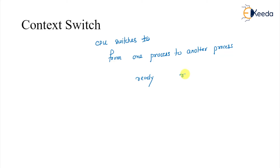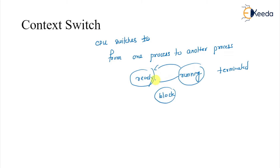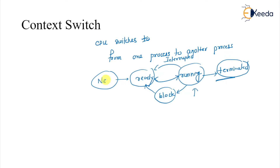There is also a blocked state. There can be many reasons why a running process can go into a different state, requiring another process to be present. One reason is termination — if a process is terminating, another process needs to run on the CPU. It can also be interrupted and go to the ready state, or it can be blocked waiting for an event or I/O operation. In that case we need to assign the CPU to another process — and that is what we call a context switch.